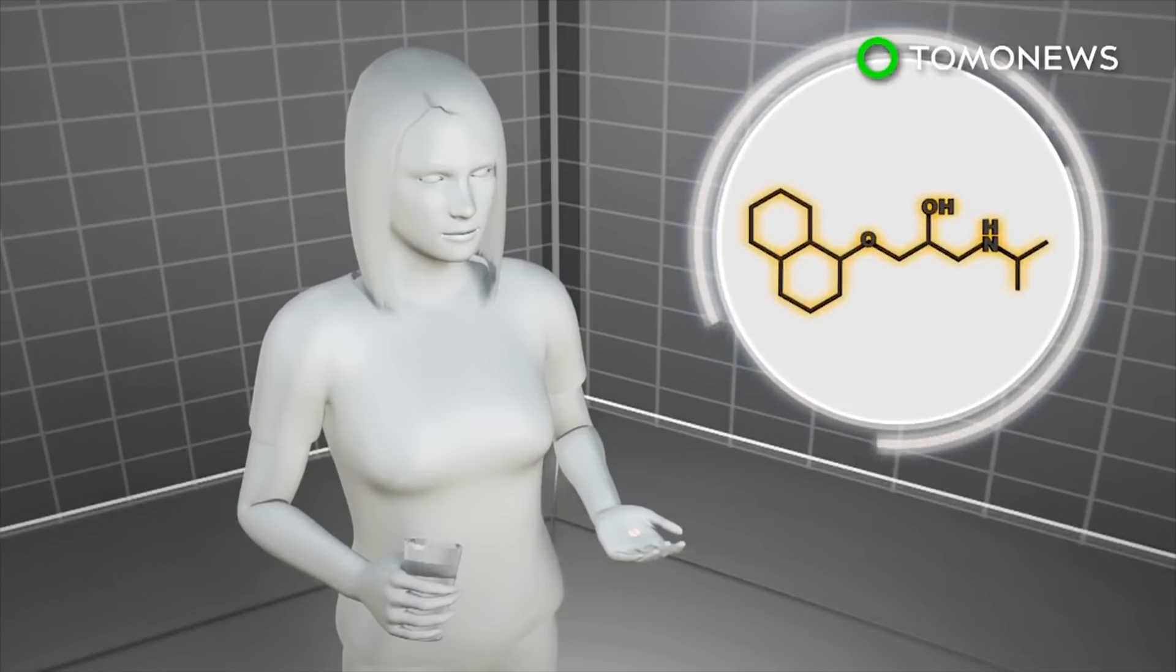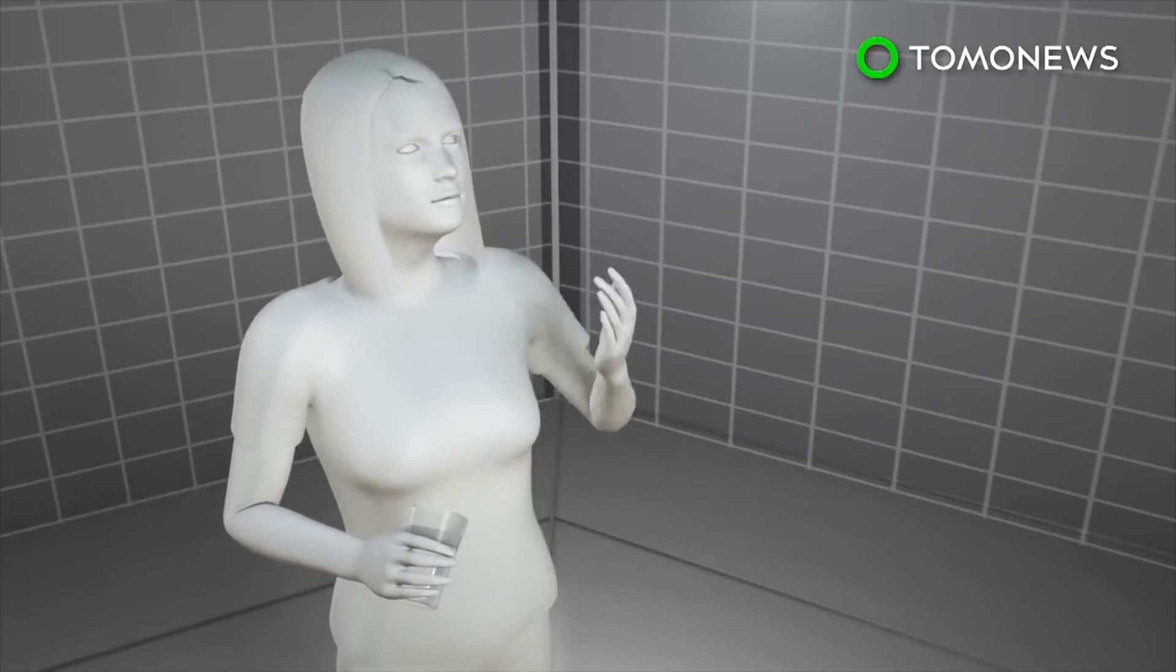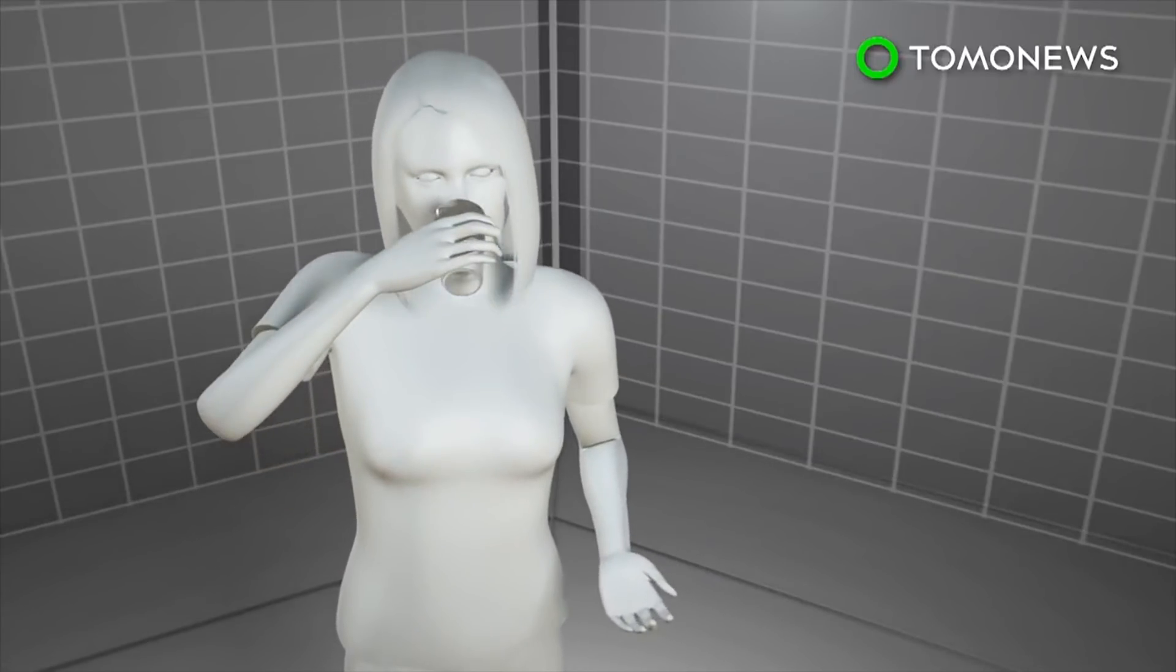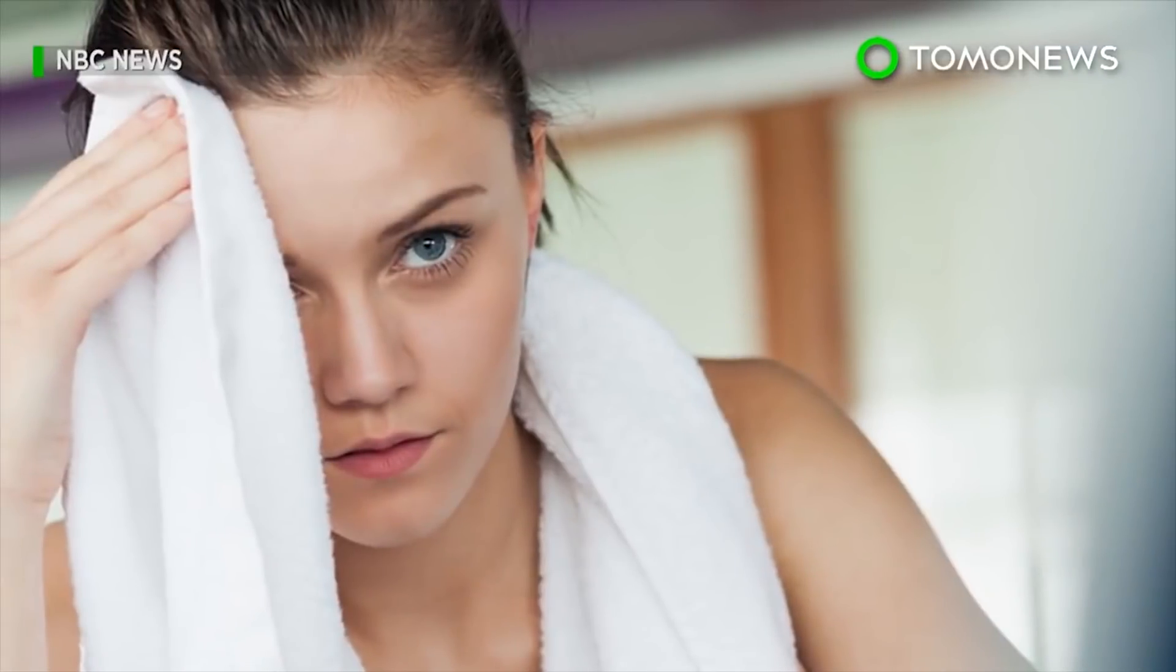The woman was treated with a beta blocker normally used to regulate blood pressure and heart rate. The medicine did not stop the bleeding, but she did experience a marked reduction in symptoms. Medical experts still don't know what causes the condition.